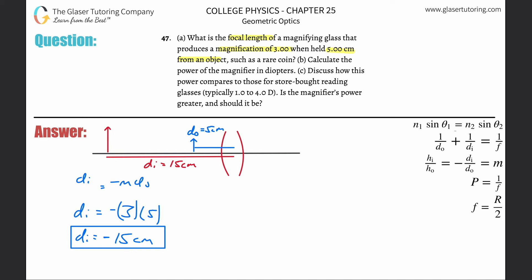That does not take care of letter a, that's why you always go back and read it. What is the focal length? I have to find di in order to be able to find the focal length. I have a formula for the thin lens: one over do plus one over di equals one over f.